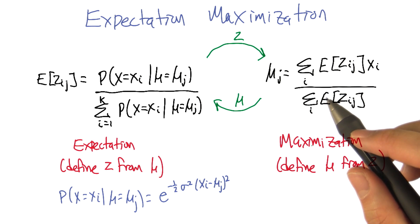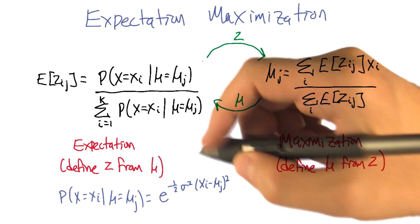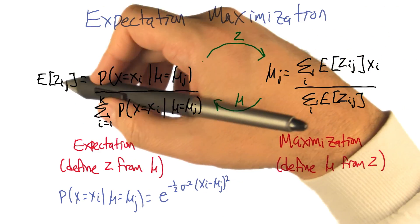We're going to move back and forth between a soft clustering and computing the means from the soft cluster. So the soft clustering goes like this.